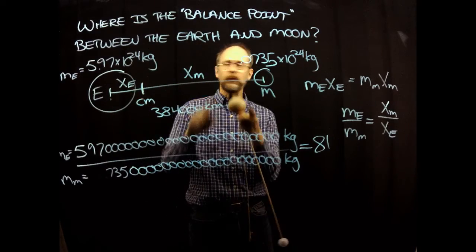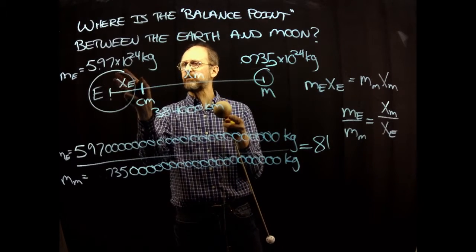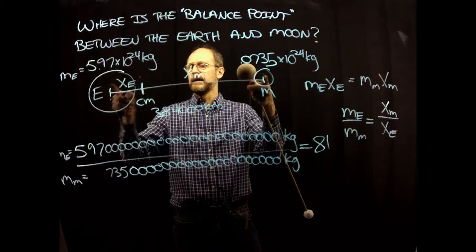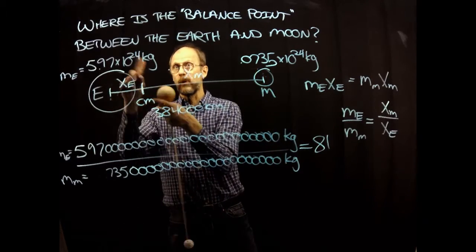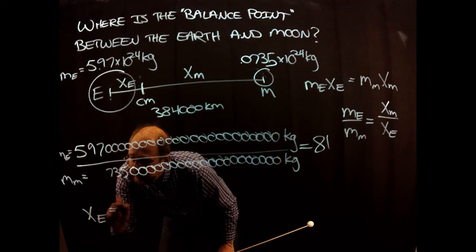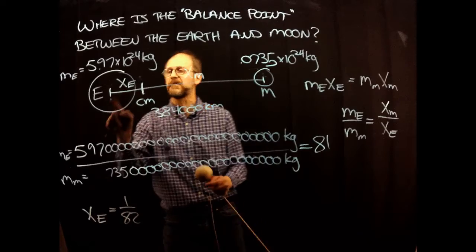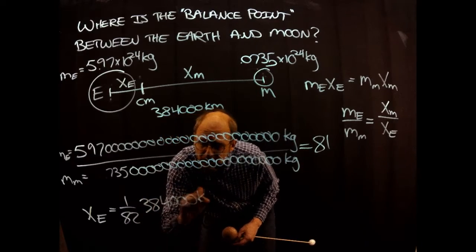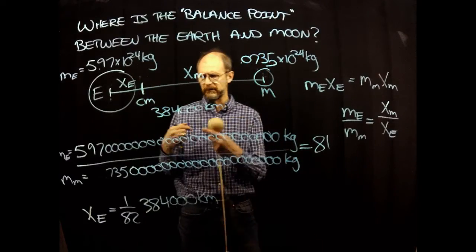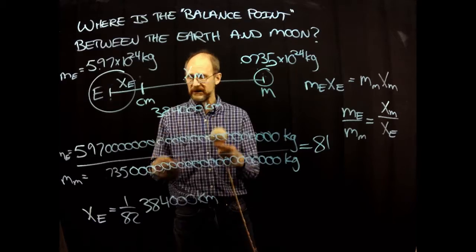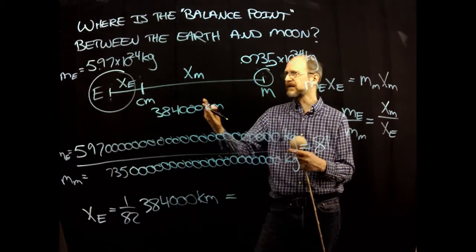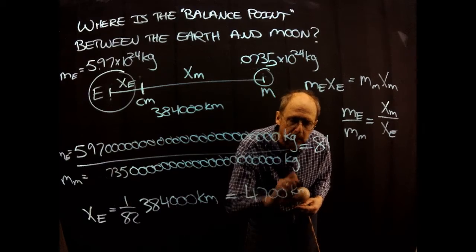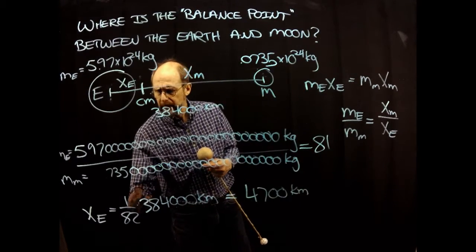And so now we can look at it and we can say, okay, if we call this one unit, this distance, this is 81 units, that gives you a total of 82 units. And the earth to the center of mass distance is one of those. So xe is 1/82nd of the distance from the center of the earth to the center of the moon. And so that's 1/82nd of 384,000 kilometers. By the way, that's the kind of average distance. The earth's orbit, the moon's orbit is not perfectly circular. So it does vary somewhat, but this is the average distance. And so you get an average distance of the earth from the center of mass of about 4,700 kilometers as being this distance.